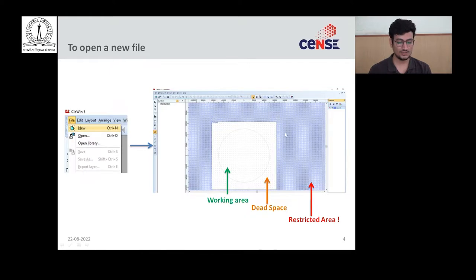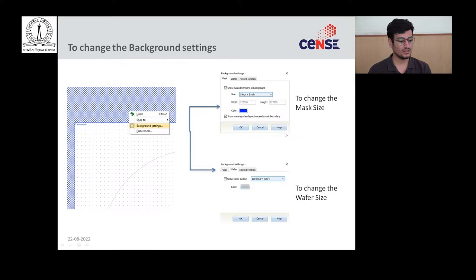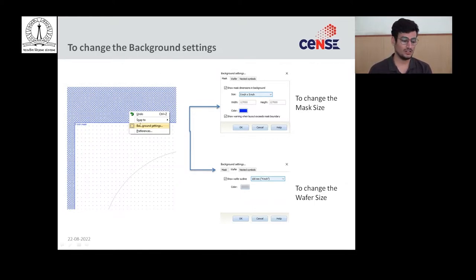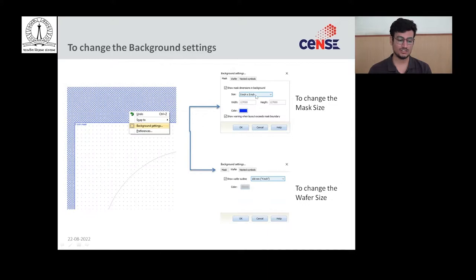These are the basic things to keep in mind. You can also change the background settings according to your sample size. Right-click on the background and go to background settings. There you can change the mask size and wafer size. For example, if you are making a 3-inch mask, you can change the size from 5-inch to 3-inch and the wafer size from 4-inch to 2-inch.